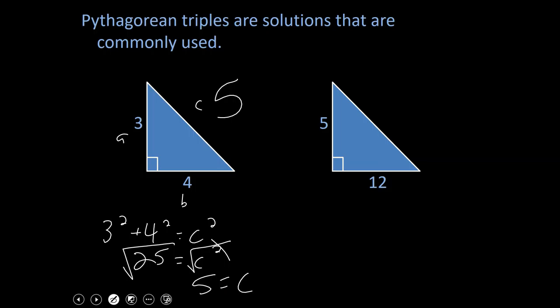So anytime you recognize that your legs are three and four, hypotenuse is going to be five. Anytime you recognize that the hypotenuse is five and you've got a leg that's four, the other leg is three. Just kind of take note of three, four, five right triangles. Same idea applies over here on the right side. We're looking at a leg of five, we'll call that A. A leg of 12, we'll call that B. And you'd be looking for this side C.